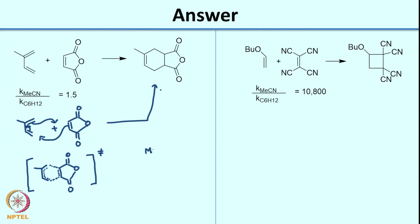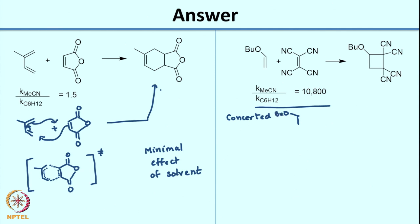As you can see, there is no development of charge in the transition state and there is no charge in the reactant either. Therefore you see a minimal effect of solvent. If I were to draw a similar concerted mechanism for the reaction shown on the right, the transition state would look like the earlier case — giving a marginal solvent effect.